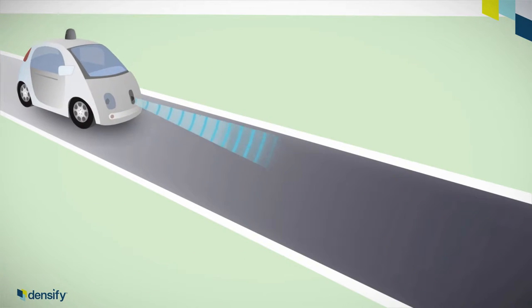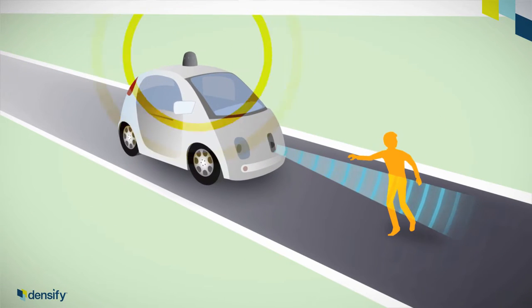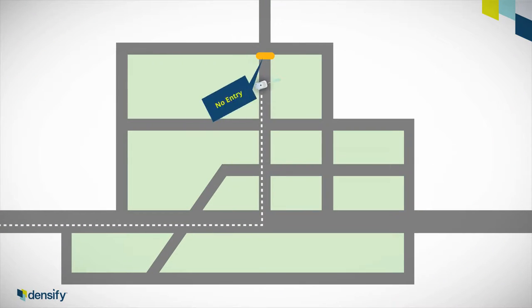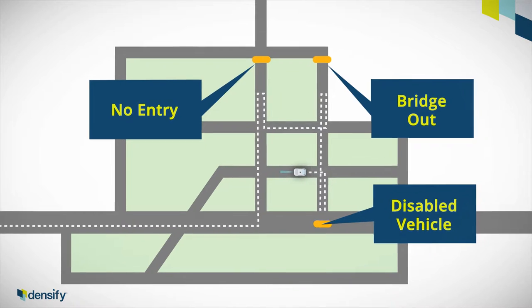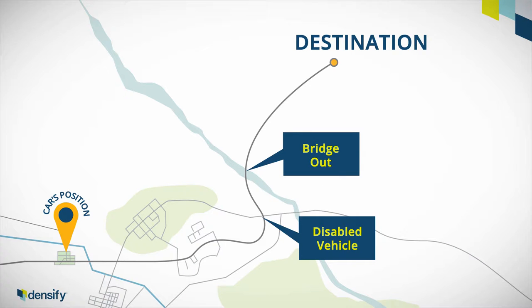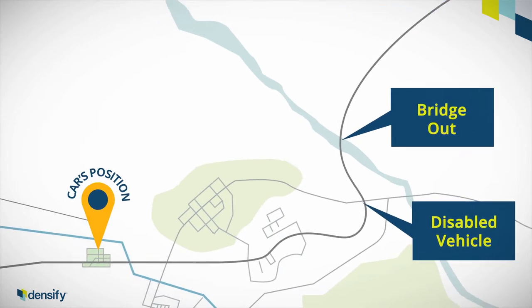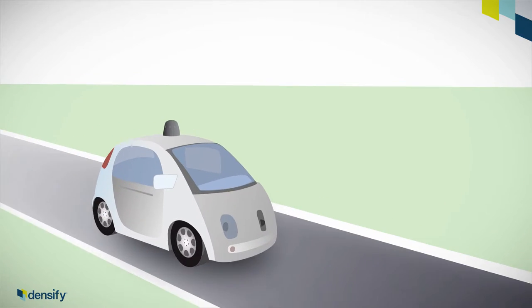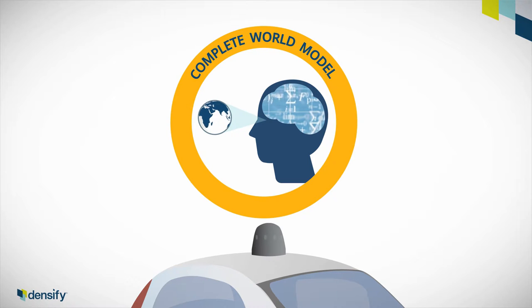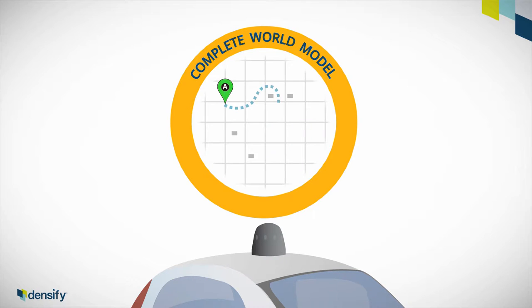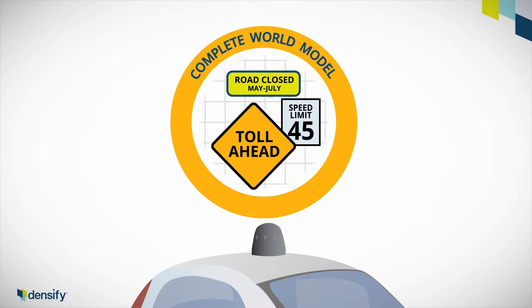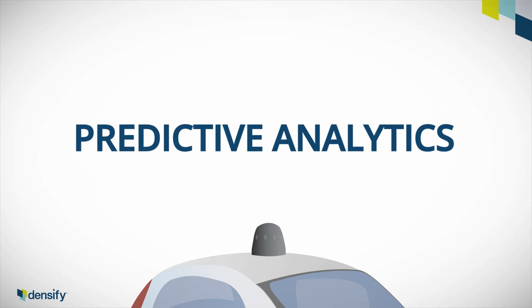Take a self-driving car. Reactive sensors respond to hazardous situations to keep the car and what's around it safe. But sensors can only react to what they see at that point in time — they don't have a broader view that enables you to achieve your goal, and they don't know what you will face on the road ahead. A driverless car needs more. It needs a hybrid control system with sensors and the ability to look at a complete world model, with a starting point and a destination, as well as an understanding of all the right variables that need to be considered. In other words, it needs predictive analytics.